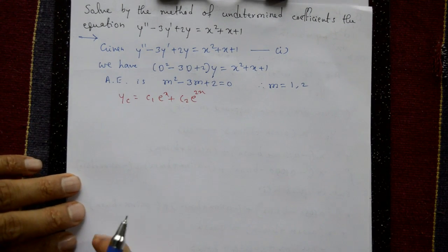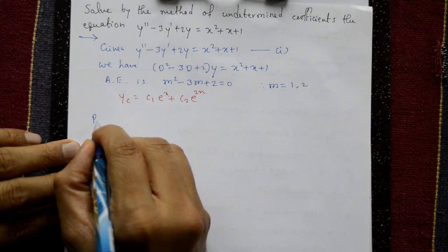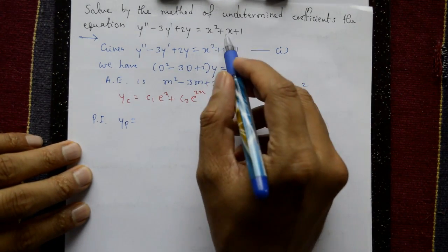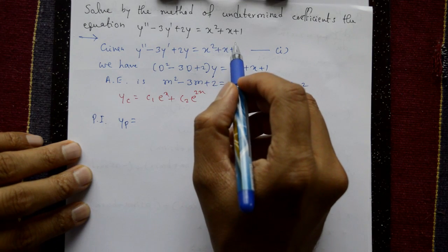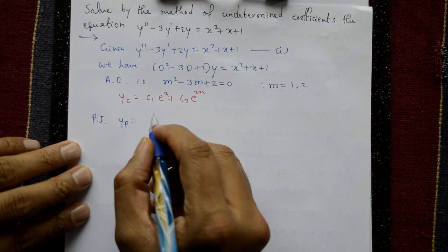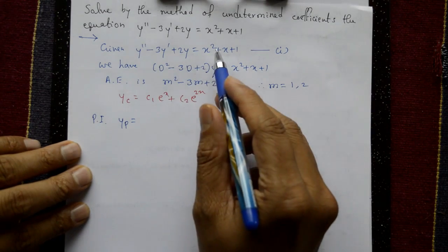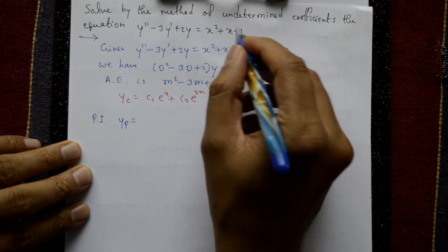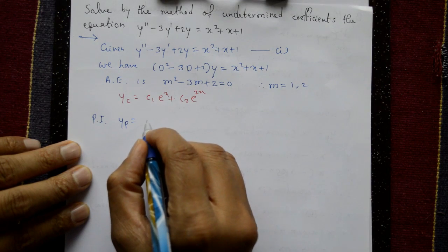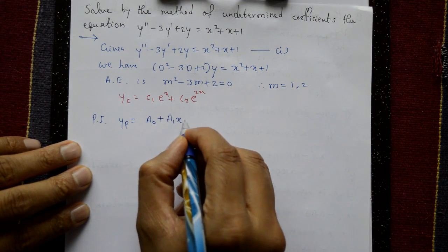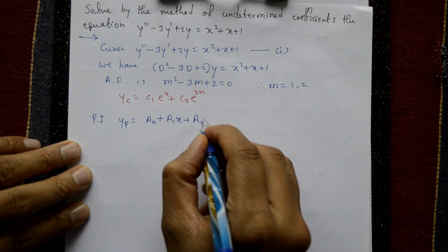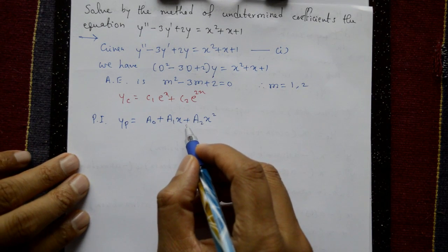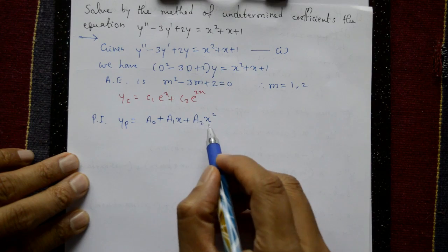Next we need the particular integral. We assume yp depending on the nature of the right-hand side φ(x). Since the roots do not appear in φ(x) = x² + x + 1, we assume yp = a₀ + a₁x + a₂x². Here a₀, a₁, and a₂ are undetermined coefficients that we need to find.